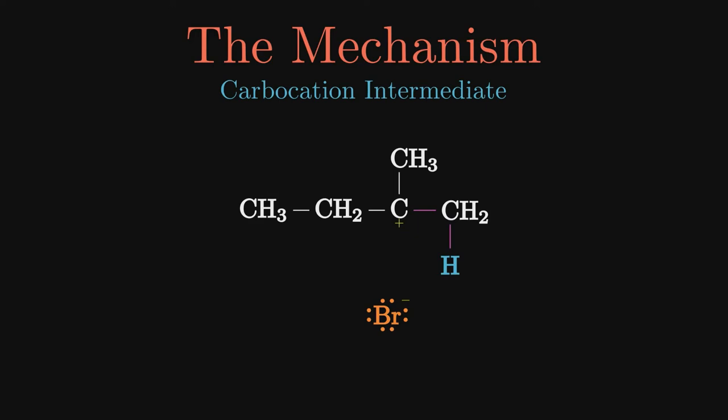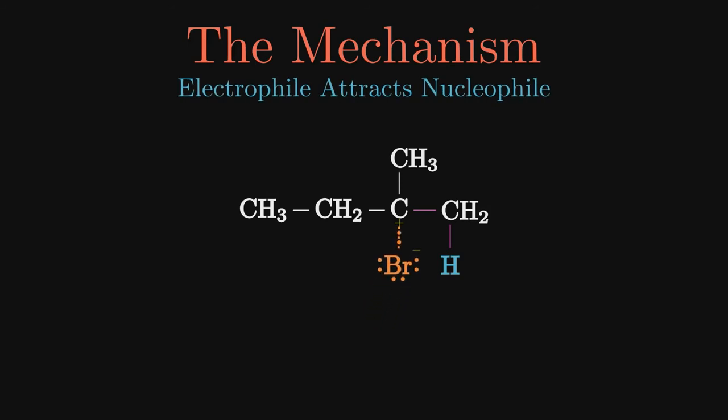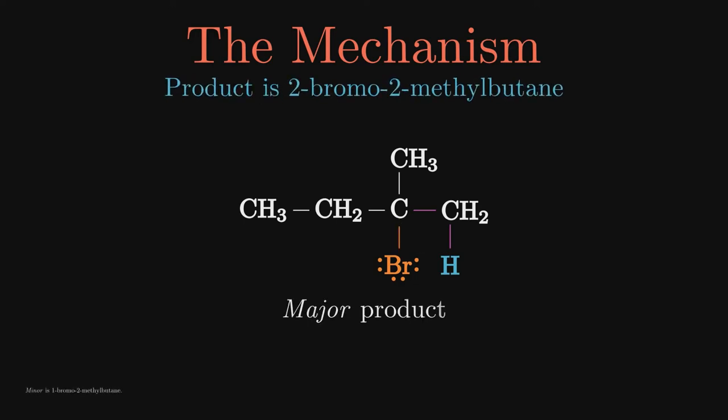While this was happening, the bromine has accepted both electrons it once shared with hydrogen and is now a nucleophilic bromide ion. The carbocation is an electrophile which attracts the bromide. The bond then forms giving us our final product, 2-bromo-2-methyl-butane. This reaction is regioselective because one potential product is favored.